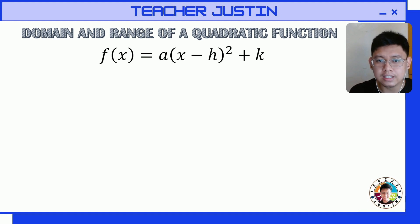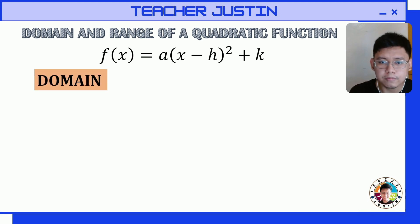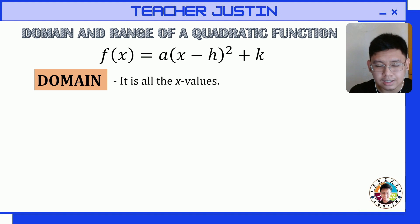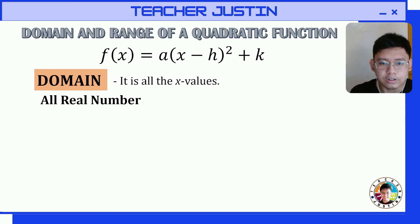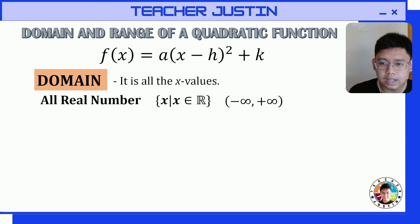The domain and range are based on the vertex of our quadratic function. For finding the domain, take note that domain is all the values of x. For the domain of our quadratic function, always remember that it is all real numbers — there is no restriction. We can write it as: x such that x is an element of any real number, or in interval form from negative infinity to positive infinity.